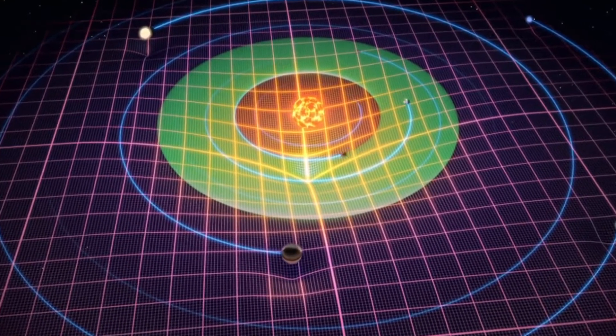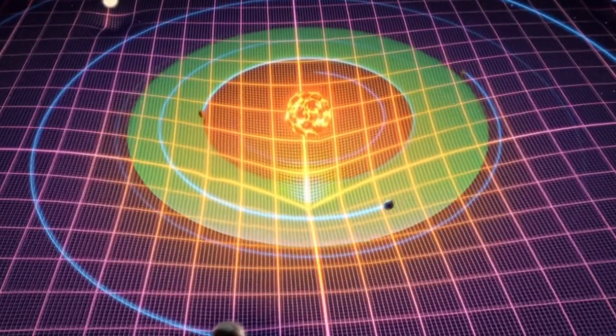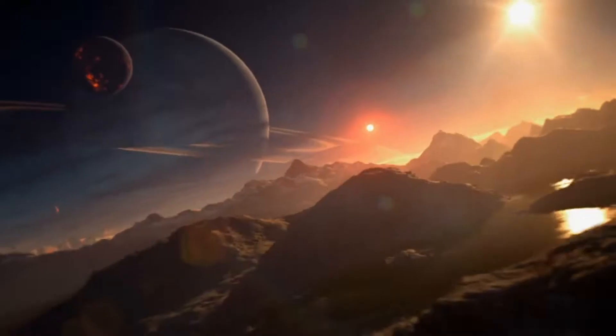So any planet's time in the habitable zone is limited, but many planets can spend upwards of a billion years with the right conditions for life.